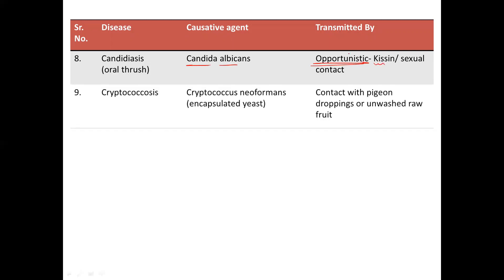Next, you have cryptococcosis, caused by Cryptococcus neoformans. It is an encapsulated yeast and is basically spread through contact with pigeon species or the consumption of unwashed raw food.